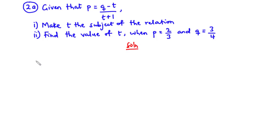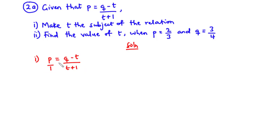So let's start off with part i. We have p equals k minus t over t plus 1. This is the relation. We are going to group terms containing t on one side. Now let's cross multiply. When we cross multiply, we have 1 times k minus t equals p times t plus 1.